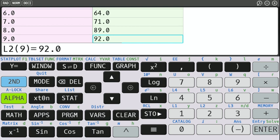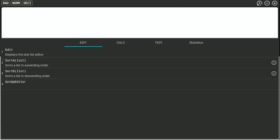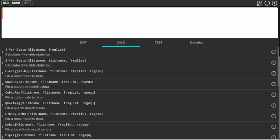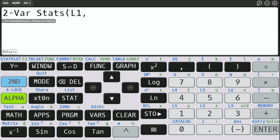So I'm going to leave the stat edit menu by hitting second mode, quit to come to the home menu. And what I want to do is I want to do two variable stats. This is a necessary step. This will not work if you have not already done two variable stats. So do stat, go to calculate, come down to two variable stats. And I'm pretty sure the default is L1 and L2, but just to be sure, I'm going to input those. Second one, comma, second two, close parentheses, enter.